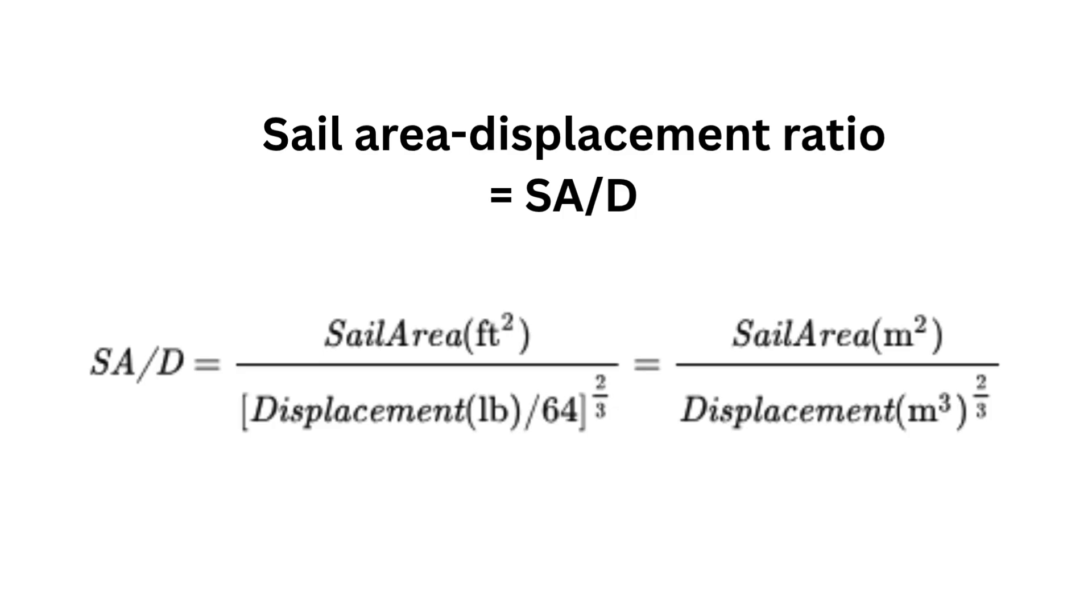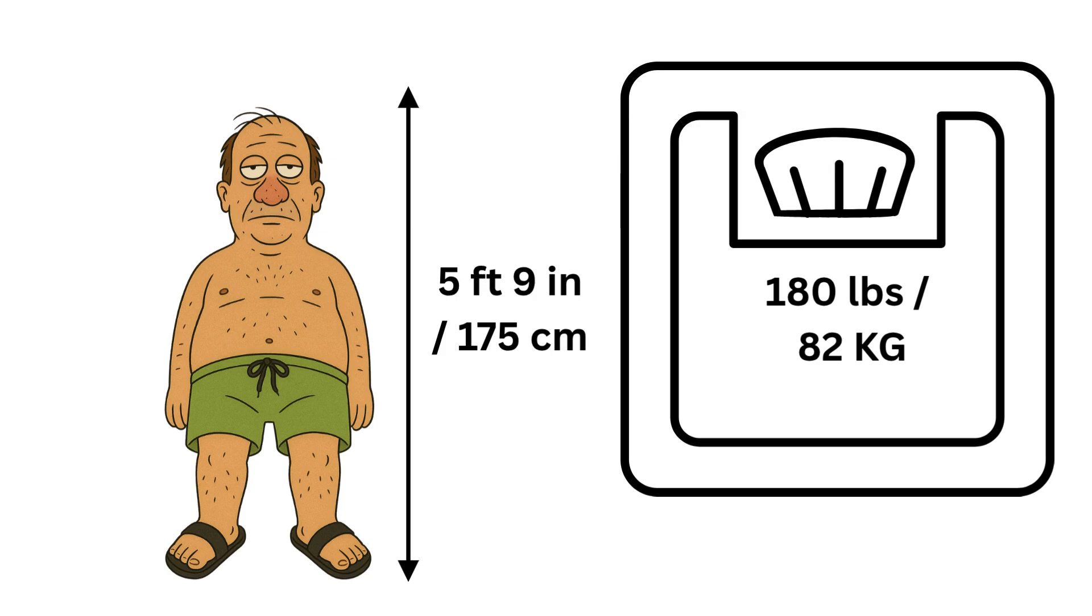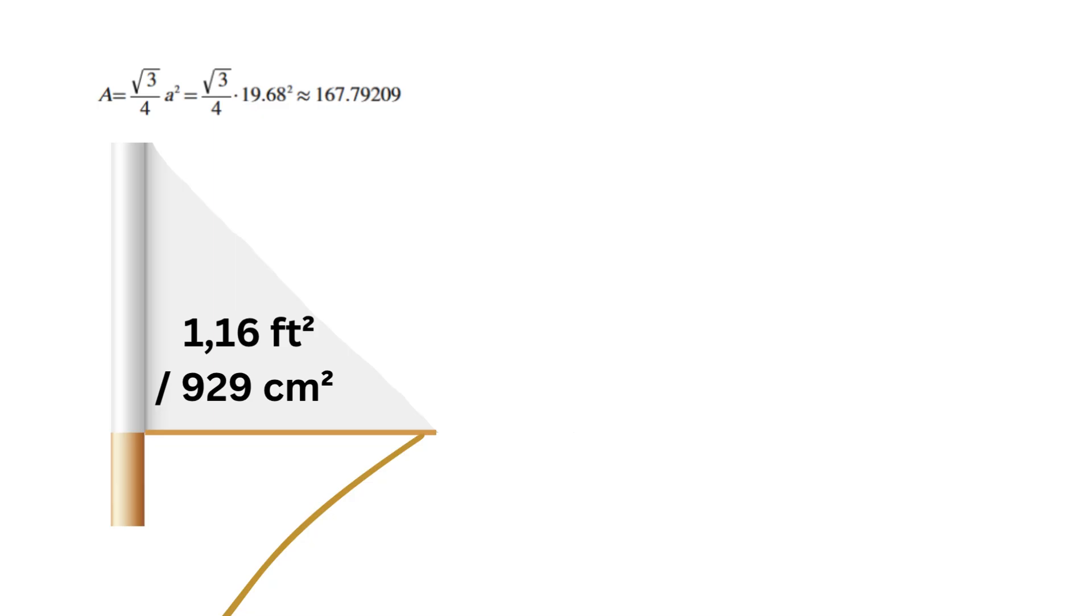The most important metric for our speed is the sail area displacement ratio, which is fittingly abbreviated as SAD. To calculate our SAD, we need to plug in the area of our sail and the weight of our boat. I did the math, assuming our guy is 180 pounds and 5 foot 9, our flag area would be 1.16 square feet. Plugging this into our neat little formula, we get a SAD ratio of around 0.6.